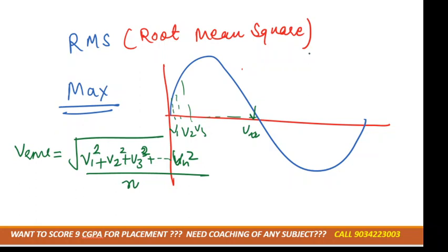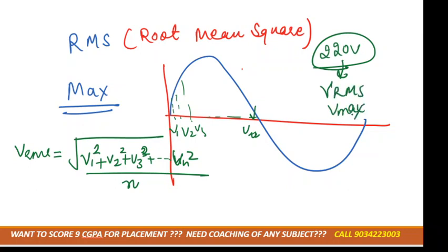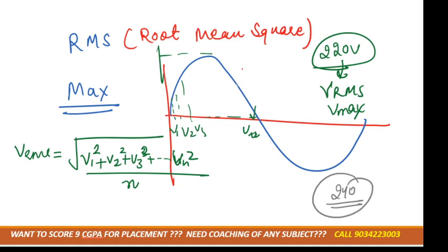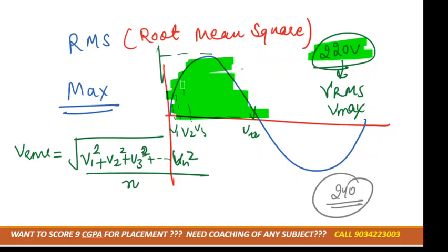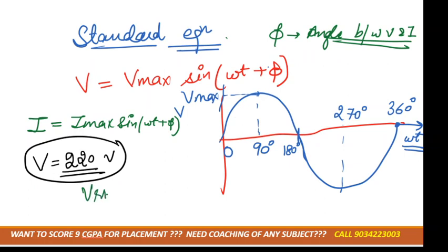Root mean square means the root of the mean of the squares: root of (v1² + v2² + v3² + ... + vn²) divided by n. The 220 volts at your house — is it RMS or maximum? The maximum voltage that comes can sometimes go up to 240 volts. Since RMS includes all voltage values, 220 volts is the RMS voltage.